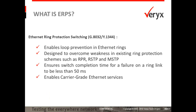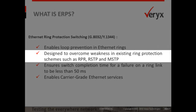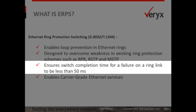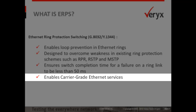Ethernet ring protection switching, as defined in the ITU-T G.8032 recommendation, ensures loop avoidance in an Ethernet ring by guaranteeing that at any time traffic may flow on all but one of the ring links. It has been built to overcome the drawbacks in existing variants of spanning tree protocols and resilient packet rings, and achieves rapid service restoration, reliably enabling carrier-class services in Ethernet ring topologies.